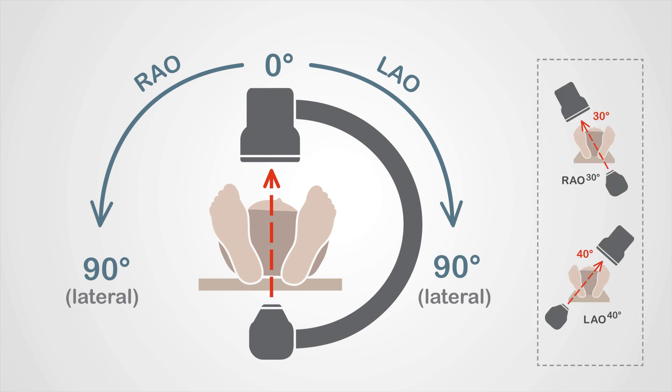Here are two example views. Using our key, you can see that in this picture the image intensifier has rotated 30 degrees to the right, and so we name this RAO 30 degrees, or RAO 30 for short. In the bottom image, the image intensifier has rotated 40 degrees to the left of the patient. We note that as LAO 40 degrees, or LAO 40 for short.